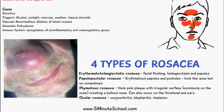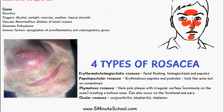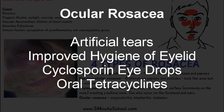For phymatous rosacea, it usually has a good prognosis if treated early, and the treatment method is typically electrosurgery or carbon dioxide lasers. For ocular rosacea, treatment options include artificial tears, improved eyelid hygiene, cyclosporine eye drops, and in some cases oral tetracyclines depending on severity.